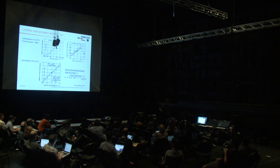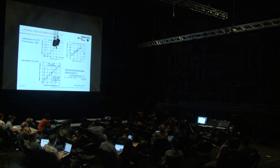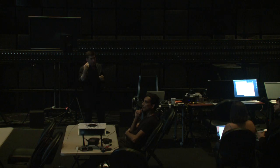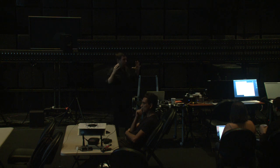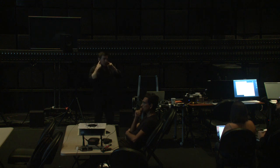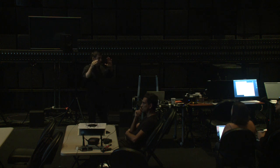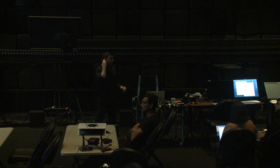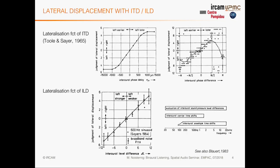Above roughly 1–1.5 kHz, the head creates sound shadow and the ILD becomes the primary cue. The maximum ILD at high frequencies is around 20 dB between the ears. If a sound comes from the right it's louder at the right ear; from the front it's equal in both ears. This is the interaural level difference. Jens Blauert's book 'Spatial Hearing' is a landmark reference — he was a very important German researcher who also gave a full lecture series at RPI.